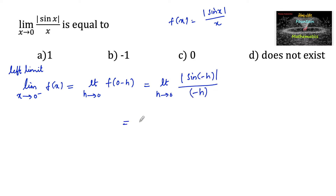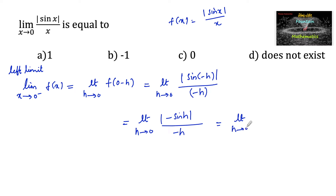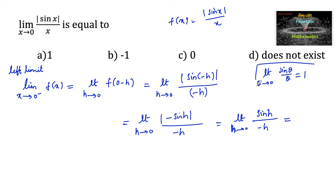This equals limit h tends to 0 of mod of negative sin h upon negative h, since sin of negative h is minus sin h. Mod of negative sin h is sin h, so this becomes sin h upon negative h. Using the standard property that limit theta tends to 0 of sin theta upon theta is 1, we get sin h upon h equals 1 as h tends to 0, so the result is negative 1. The left limit is negative 1.